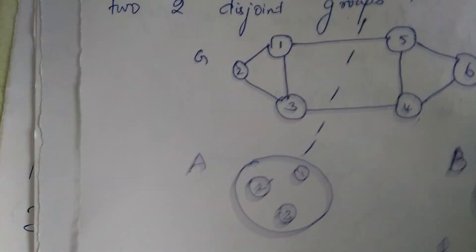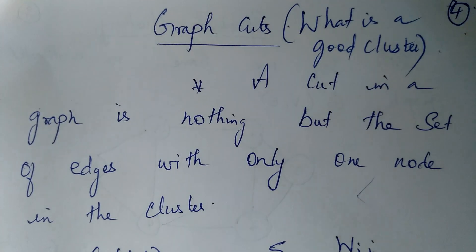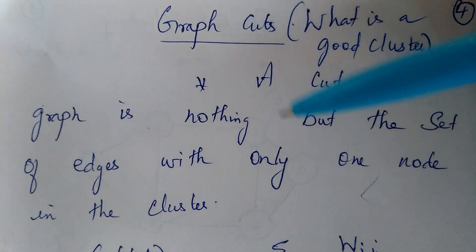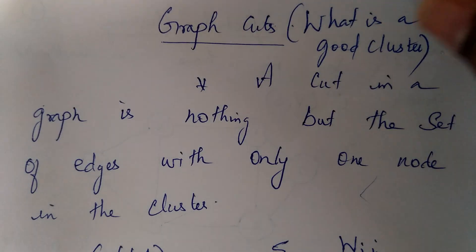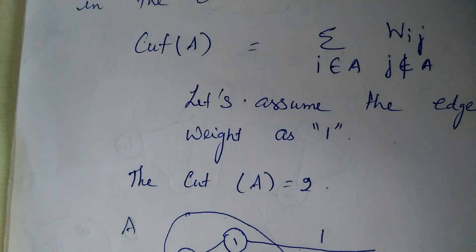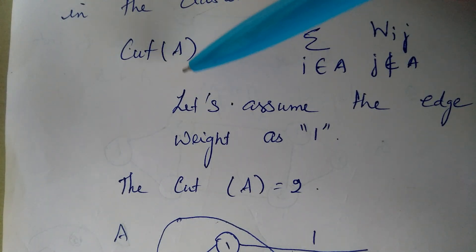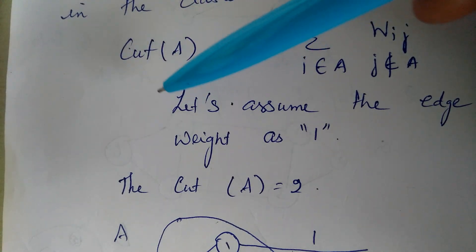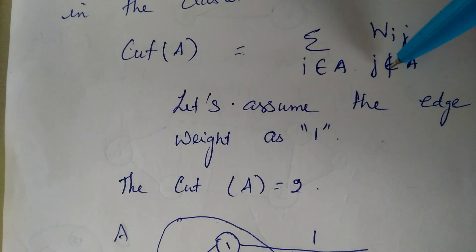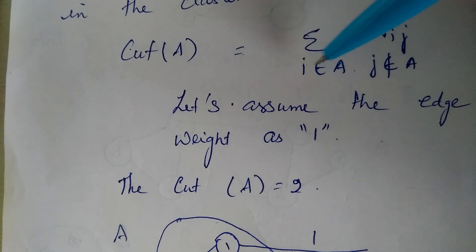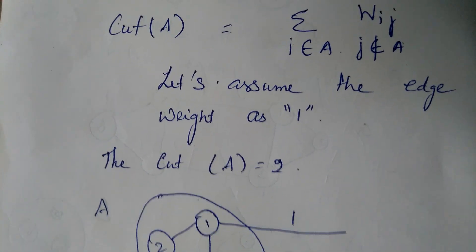Before we see the actual spectral clustering technique, we need to understand certain metrics for forming a good cluster from a graph. One such metric is the graph cut. A graph cut is the set of edges with only one node in the cluster. The cut of cluster A is the summation of edges where node i belongs to cluster A and node j does not belong to cluster A.